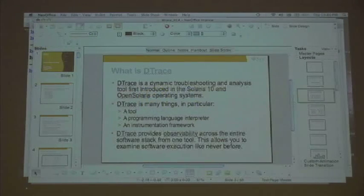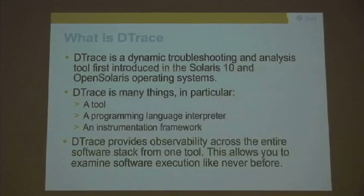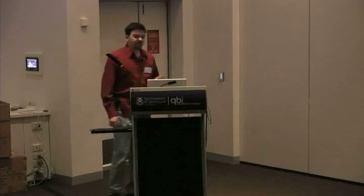Now we've seen DTrace. DTrace is a dynamic troubleshooting and analysis tool first introduced in Solaris 10 and OpenSolaris. I'm now running it on Mac OS X, which is great. It's many things — in particular a tool, a programming language interpreter, an instrumentation framework — and it provides observability across the entire software stack from one tool. It allows you to examine software execution like never before, and that's best demonstrated as I'll go through some things.